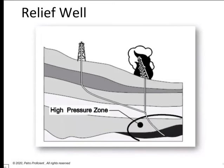Relief wells are drilled when there is a blowout and there is no way to control the well from surface due to fire. You drill a deviated well and very precisely intersect the blowing well at a certain depth in the high pressure zone, then pump heavy mud and cement into it. Relief well drilling is a very complex, challenging process. A well-known example is the Macondo blowout in the Gulf of Mexico, where BP had a blowout and a relief well was drilled — the blowing well was eventually capped after one to two months using the relief well.